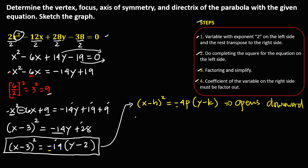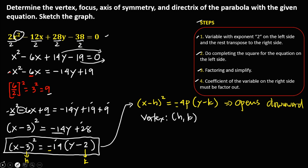To solve for the vertex, which is (h, k): from the standard equation, h is 3 and k is 2 (since the equation has minus 2, k equals positive 2). So the vertex of this parabola is (3, 2).